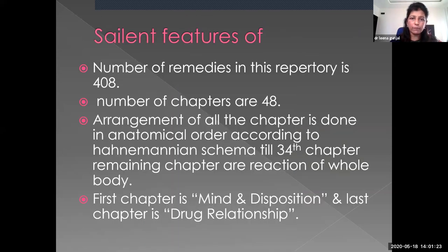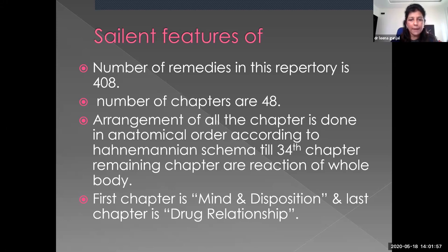The salient features of this repertory: the number of remedies is 408, and the chapters number 48. The arrangement of all chapters is done in anatomical order according to the Hahnemannian schema up to the 34th chapter. The remaining chapters cover the reaction of the whole body. The first chapter starts with mind and disposition, and the last chapter is drug relationship. In Gentry's Repertory there were 420 remedies; in Neer's Repertory there are 408 remedies.